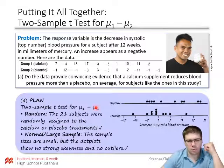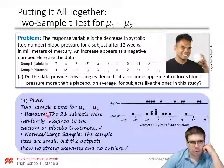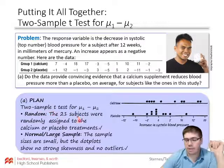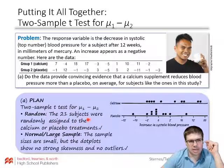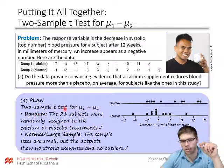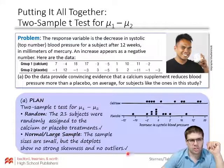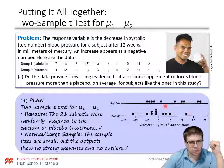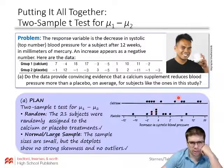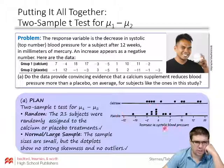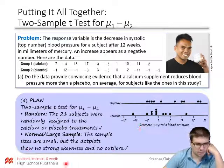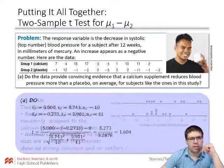For the plan step, we're doing a two-sample t-test for mu1 minus mu2. The random condition is met by random assignment — the 21 subjects were randomly assigned to the calcium and placebo treatments. Note we do not have to check the 10% condition with experimental design. For the normal/large sample condition: we don't have a large sample and don't know if it's normal, so we graph our data. The graphs look good — no strong skewness or outliers in either group, with the calcium group showing slightly more decrease in blood pressure.